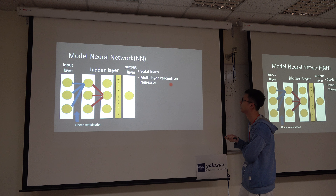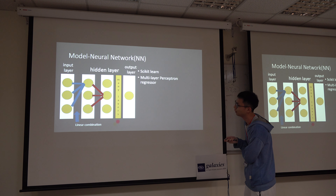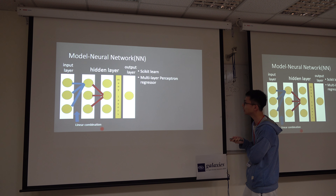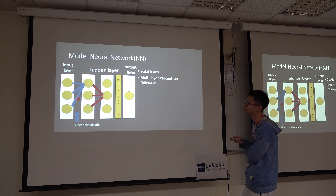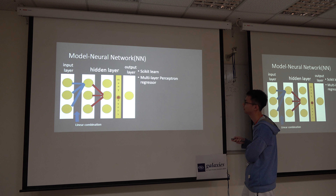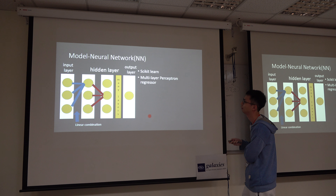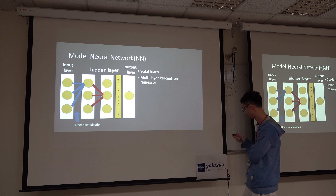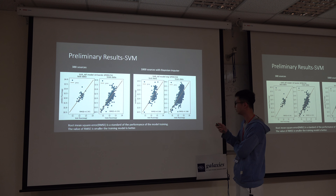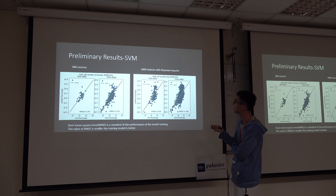When y-hat converges, we finish training the model. The second model is the Neural Network — also using scikit-learn, the regression function is called Multi-Layer Perceptron regression. It consists of many layers, and in each layer there are many perceptrons. Every perceptron is calculated by a linear combination from the previous layer, propagating through to the output layer, which gives the far-infrared flux value.